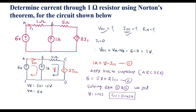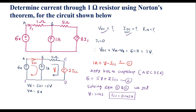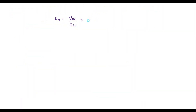Now we calculate the Norton's resistance Rn. Since the circuit has dependent sources, Rn = VOC / ISC = 1 volt / 0.143 = 7 ohms.